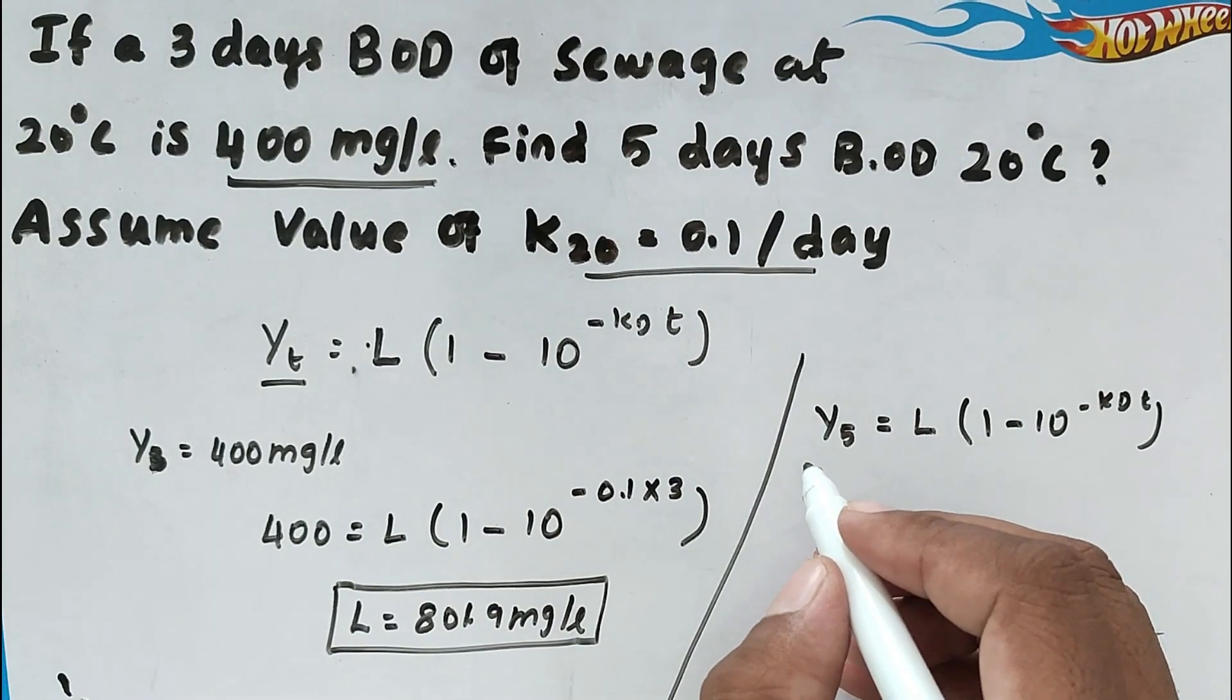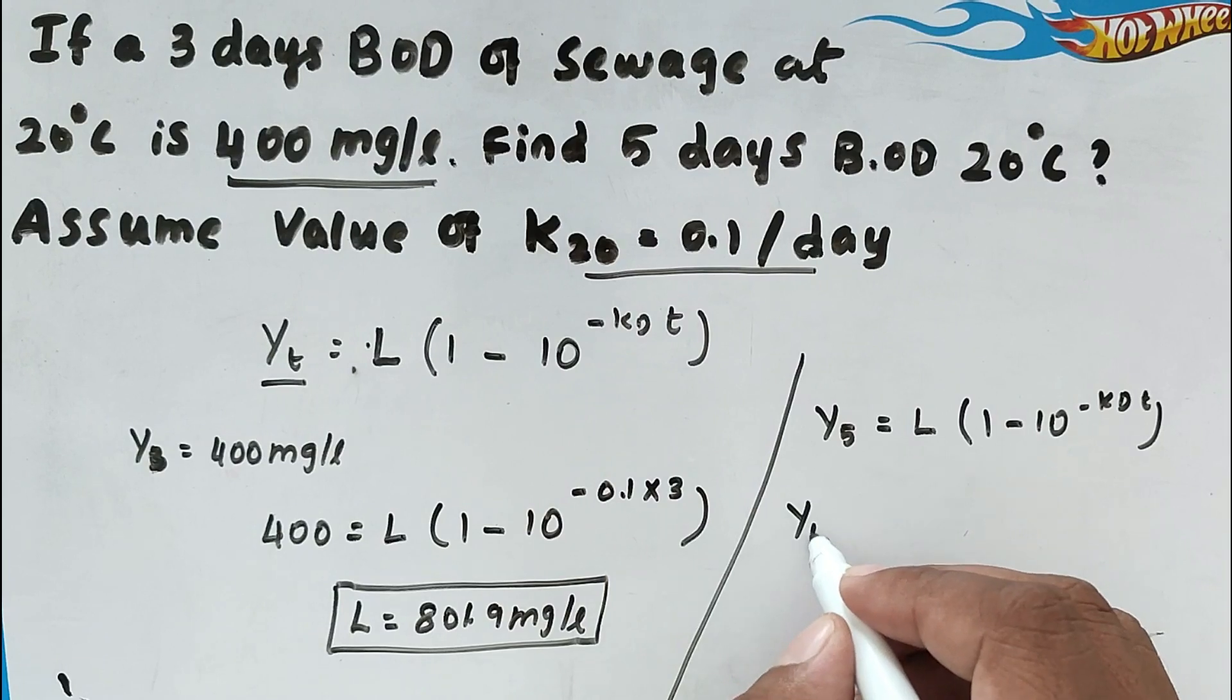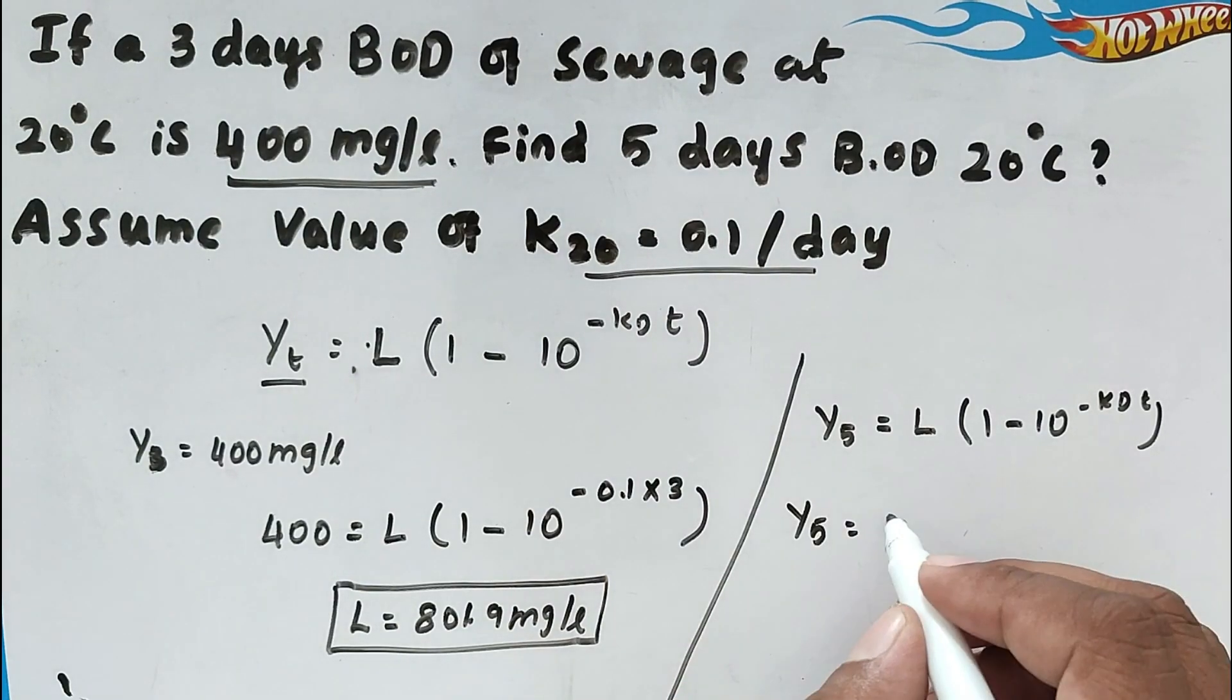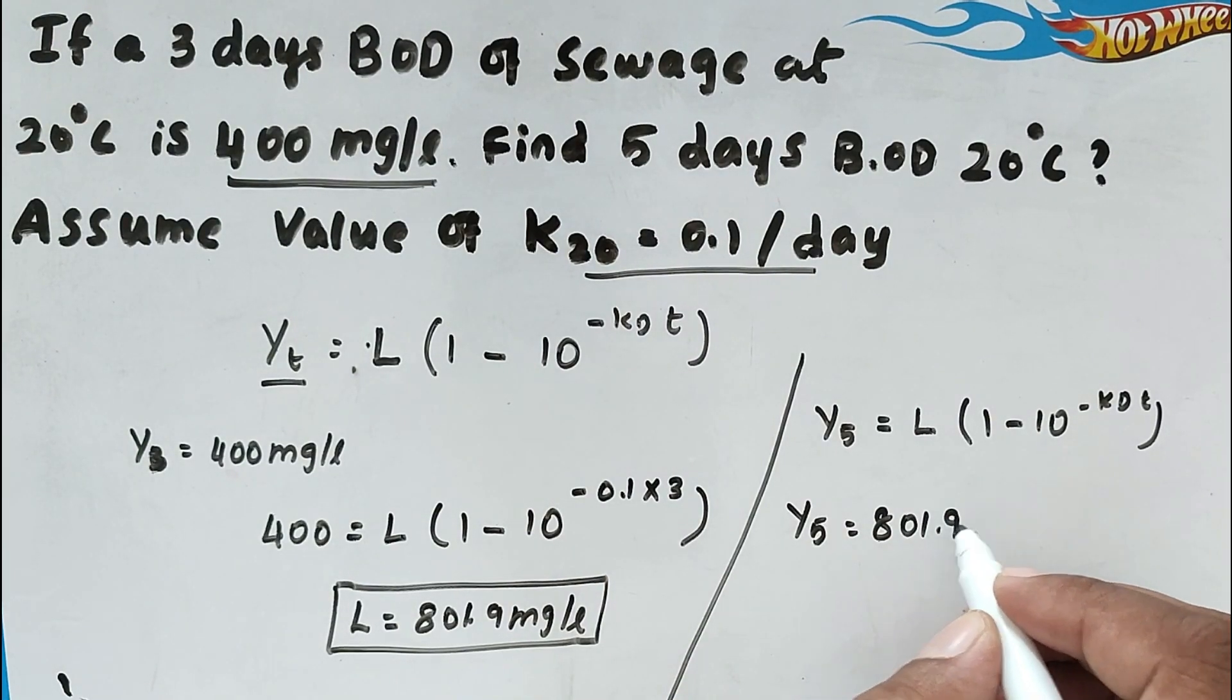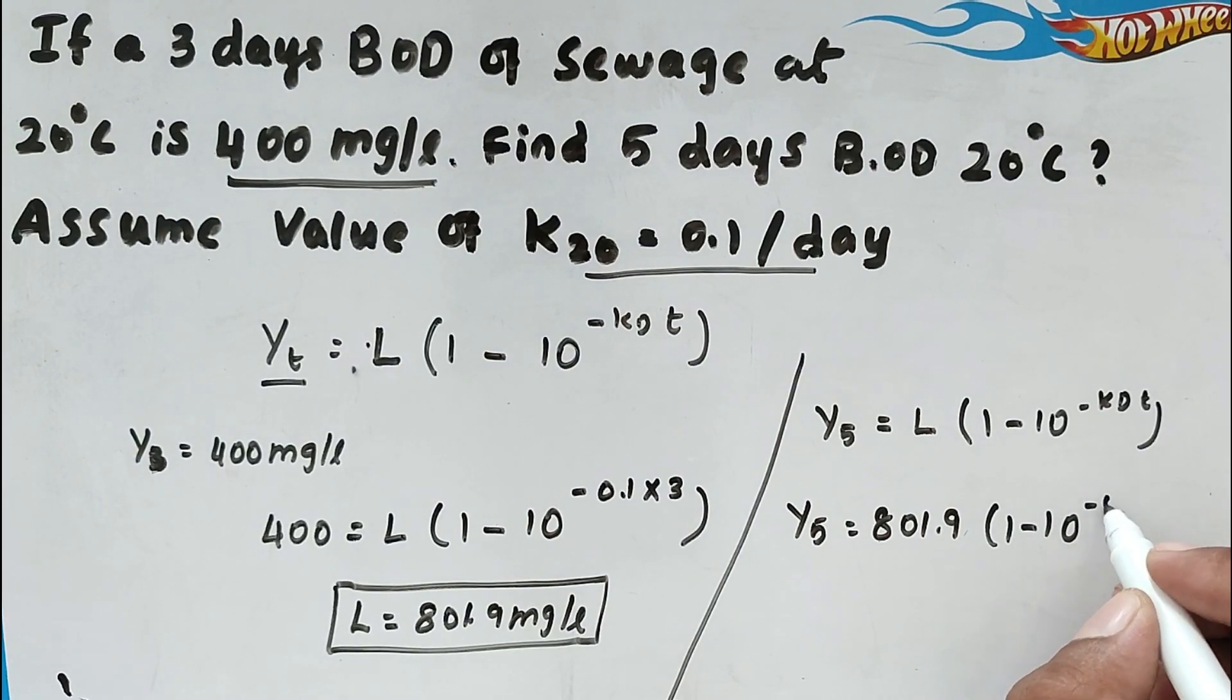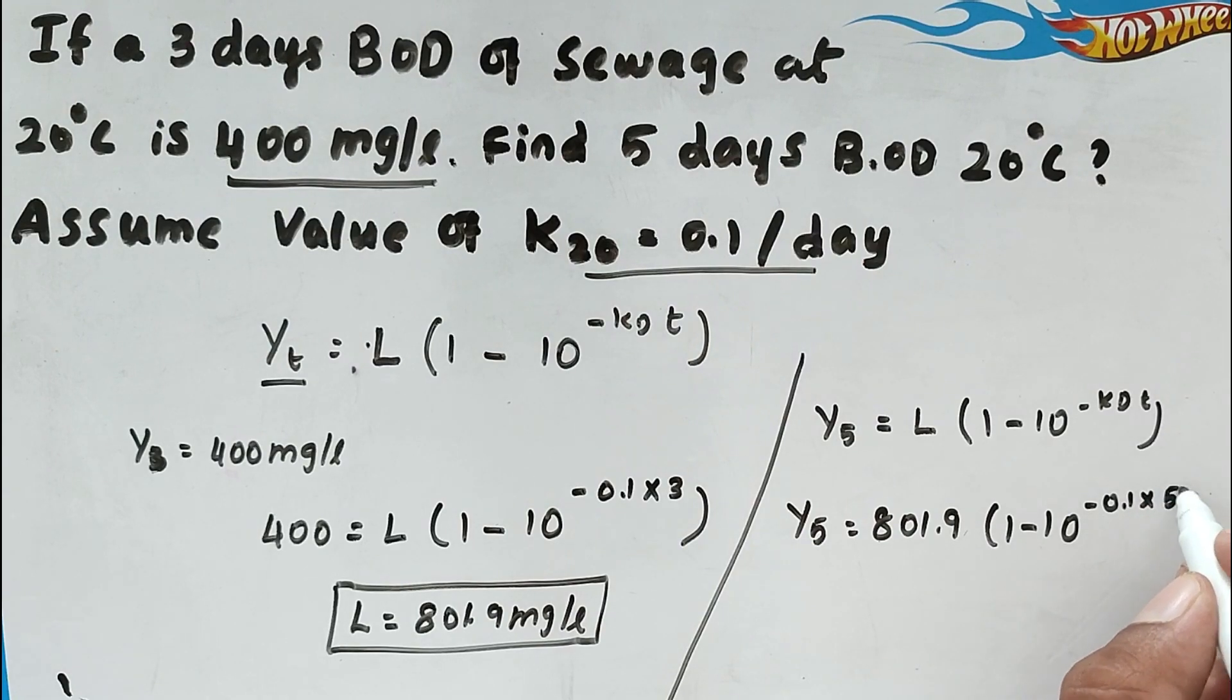So now the value will be Y5 days we have to find out, equal to L value same 801.9 into 1 minus 10 power Kd value is same for the same sample into T is 5 days.